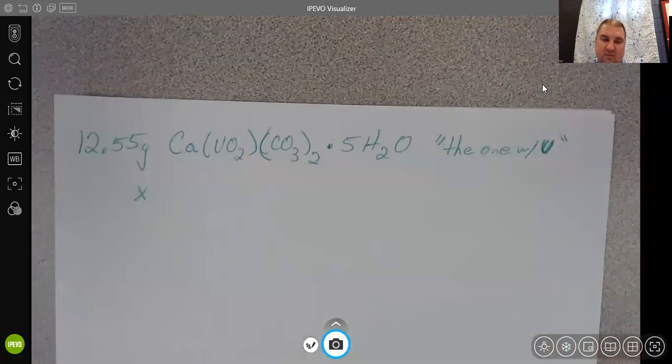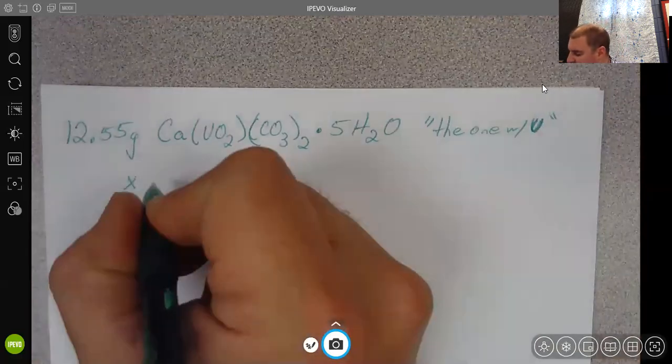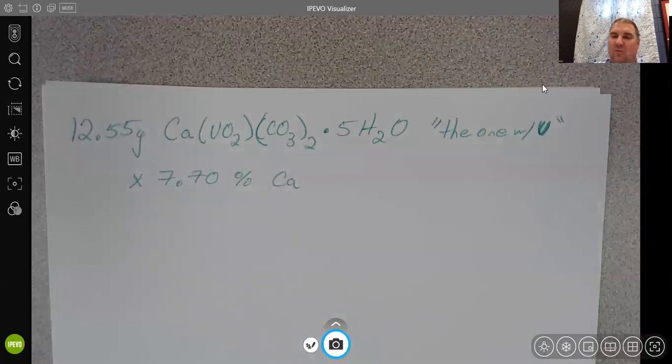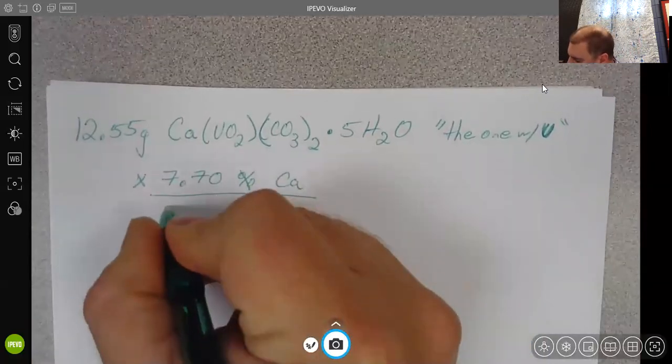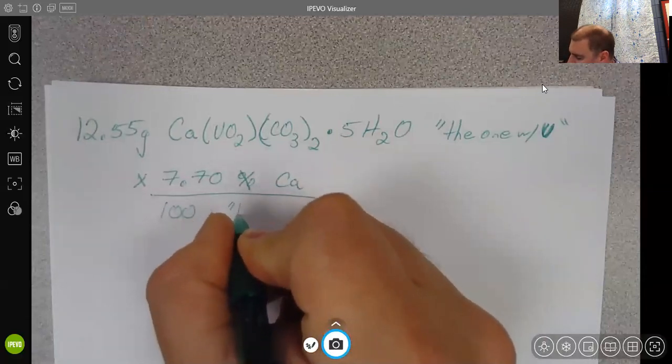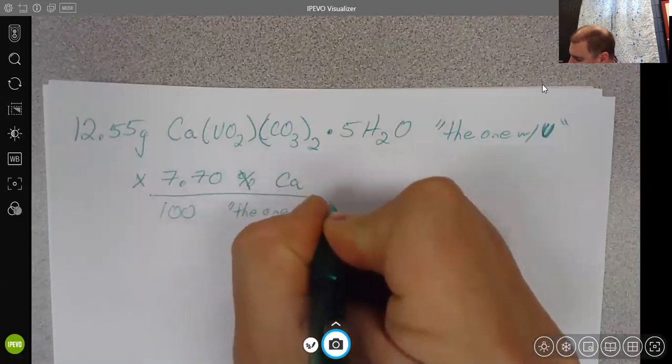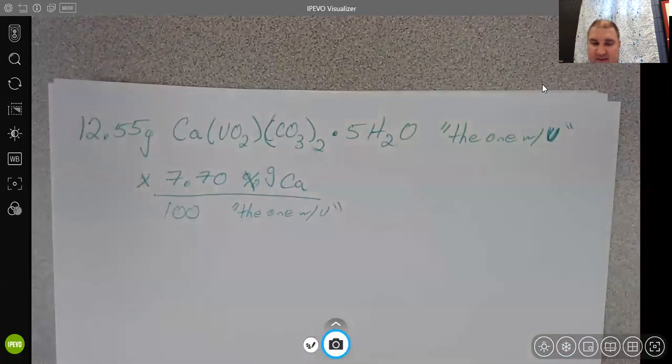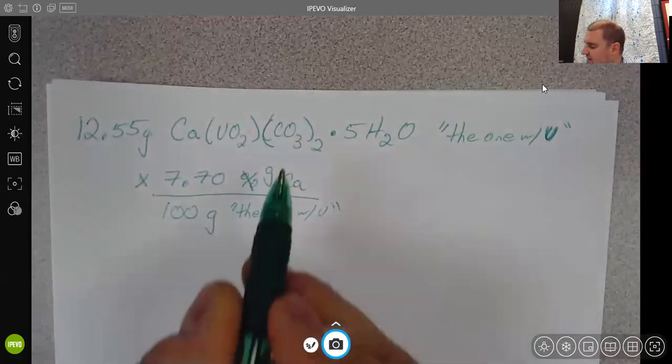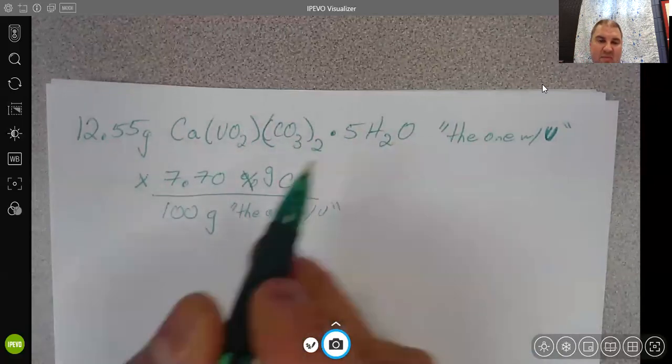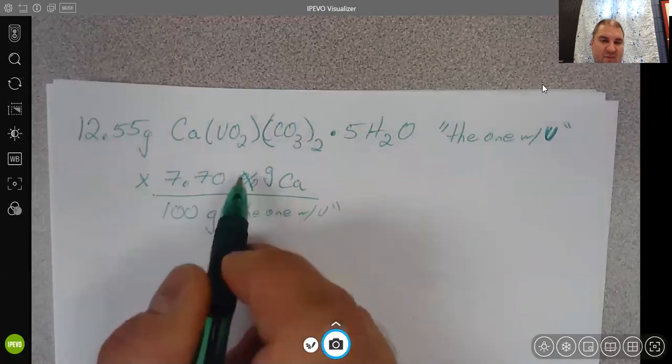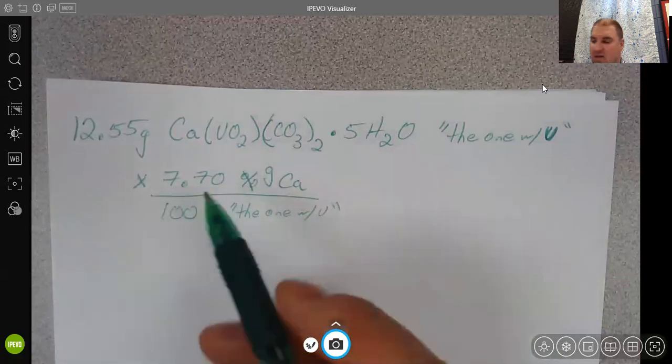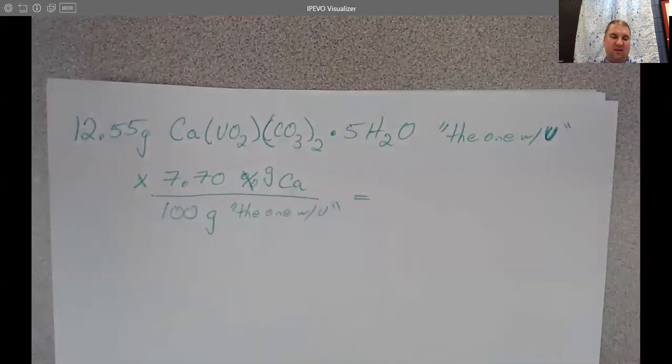You would multiply that starting number by your percent of calcium. So we have in this compound 7.70% calcium. Well, what that percent really means is that it really means per 100 of the one with uranium. And it's not just 7.70 over 100, it's 7.70 grams of calcium over 100 grams of this whole compound. So if you had 100 grams of this whole compound, you would expect to find 7.7 grams of calcium. Because we only have 12.55 grams, we would expect to find much less than the 7.70.